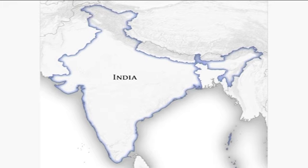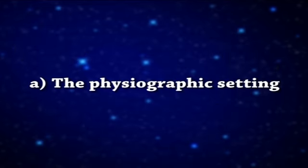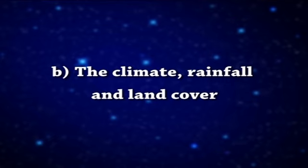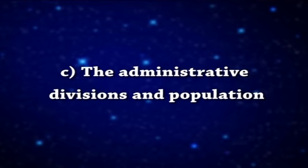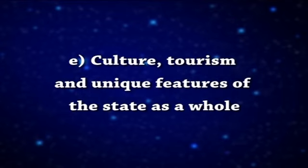India is a union of states. Each part of India is unique in its geography and socio-economic conditions. Goa is one of the prominent states in India. The main objectives of learning this lesson are to know about its geographic setting, people, governance and contribution in the country. The aspects covered in this module are: the physiographic setting, the climate, rainfall and land cover, the administrative divisions and population, the economic resources and contributors, and culture and tourism.